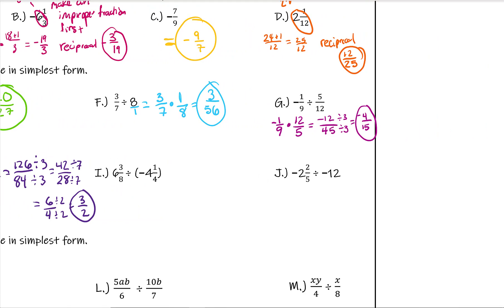Next one — we're going to convert these to improper fractions again. 6 times 8 is 48 and 4 times 4 is 16. So it becomes 48 plus 3 over 8, and negative 16 plus 1 over 4. 48 plus 3 is 51, so we have 51 over 8 divided by 17 over 4.